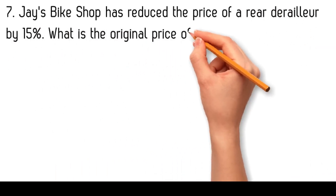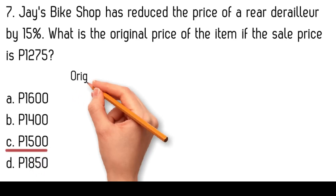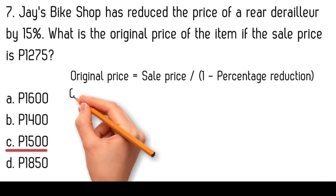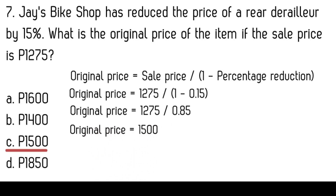Jay's bike shop has reduced the price of a rear derailleur by 15%. What is the original price of the item if the sale price is 12.75 pesos? To find the original price, we use: original price equals sale price divided by (1 minus percentage reduction). Original price equals 12.75 pesos divided by (1 minus 0.15), equals 12.75 divided by 0.85, so original price equals 1500 pesos.